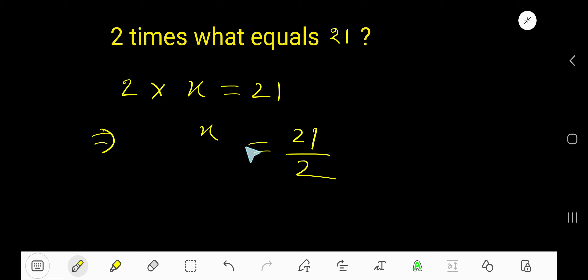That is, 2 times what equals 21? 2 times 21 divided by 2 equals 21. Since this is an improper fraction, you can convert it into a mixed number by dividing the numerator by the denominator.